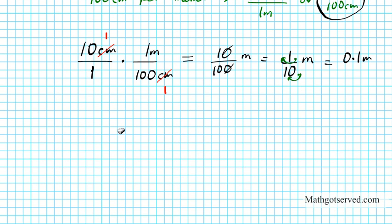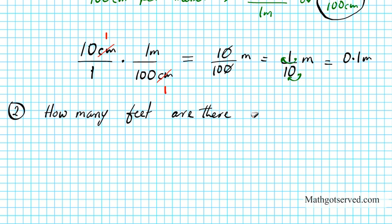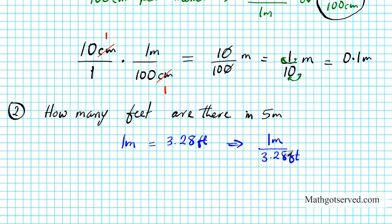Now let's take a look at question number 2. Question 2 is: how many feet are there in 5 meters? We know the conversion factor — 1 meter is equal to 3.28 feet. So what are the two conversion factors I can formulate? I know that 1 meter over 3.28 feet is my first conversion factor, or 3.28 feet over 1 meter is my second. These two conversion factors equal 1 because they have the same magnitude.